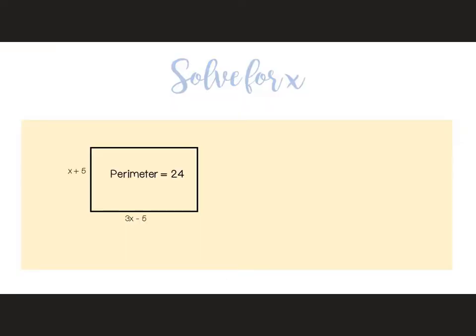This is a really similar problem, only this time I have variables. The first thing I want to do is label my opposite sides as the same. So if this side is x plus five, the opposite side is also x plus five. If this side is three x minus five, the opposite side is also three x minus five.